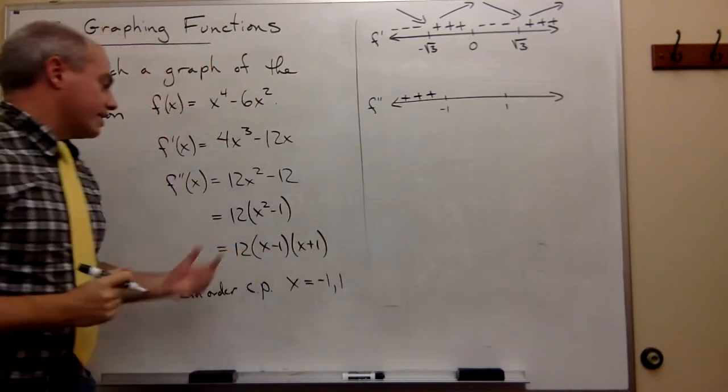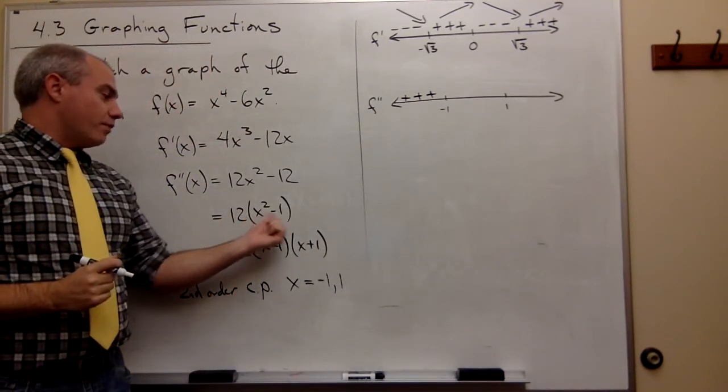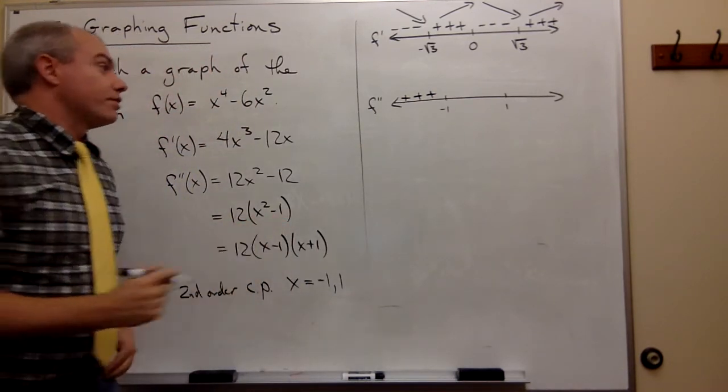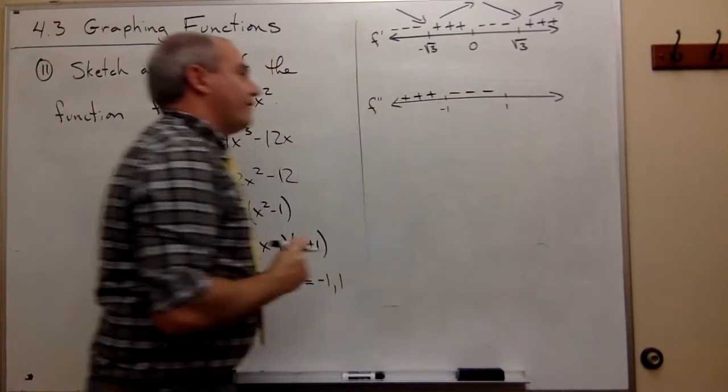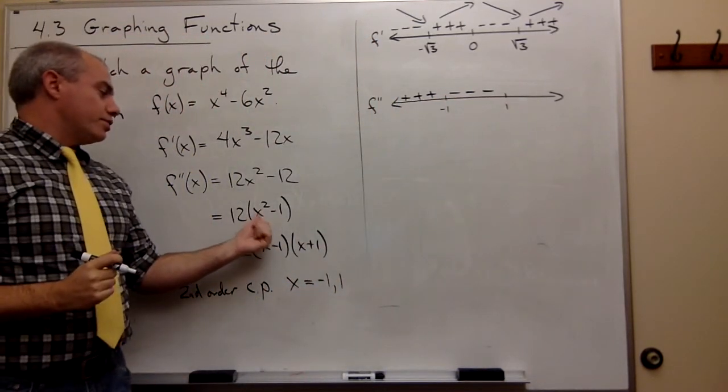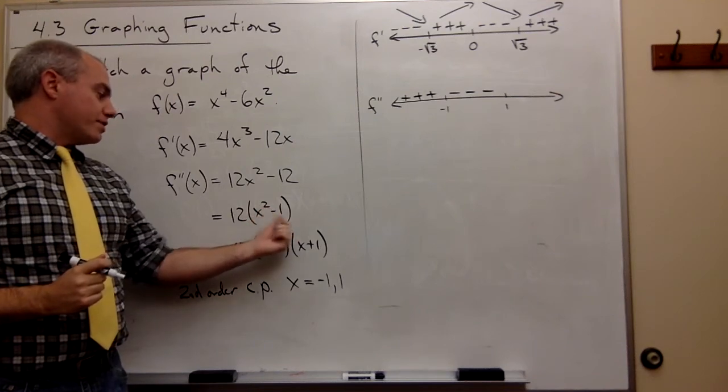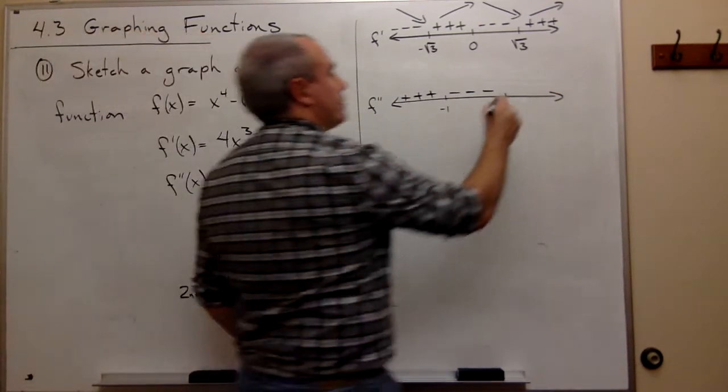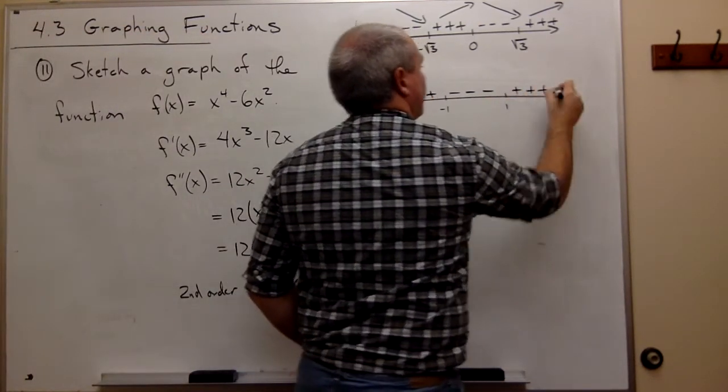Let's plug in, let's say, 0. If I plug in 0 minus 1 times 12, that's certainly negative. And if I plug in something like 2, 2 squared is 4 minus 1 is 3 times 12 is positive.